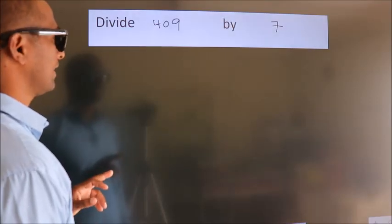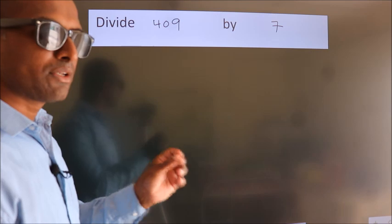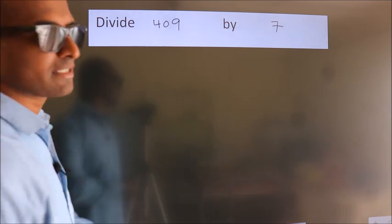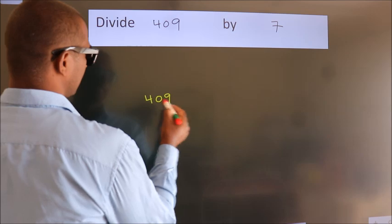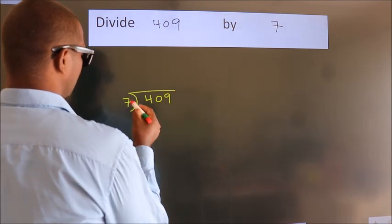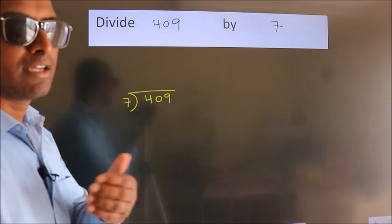Divide 409 by 7. To do this division, we should frame it in this way. 409 here, 7 here. This is your step 1.